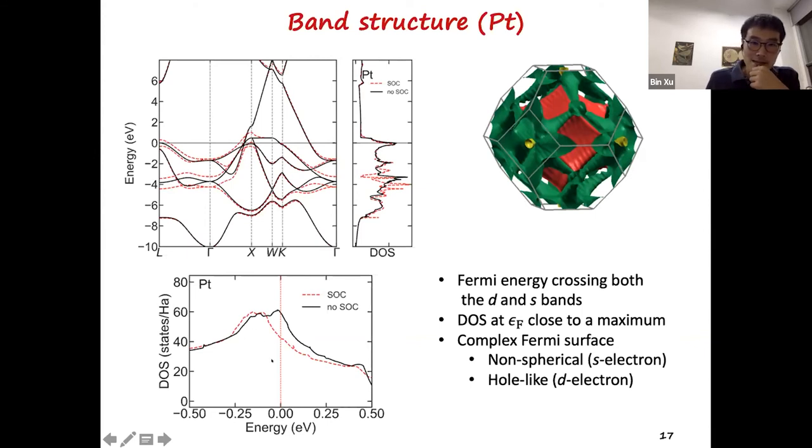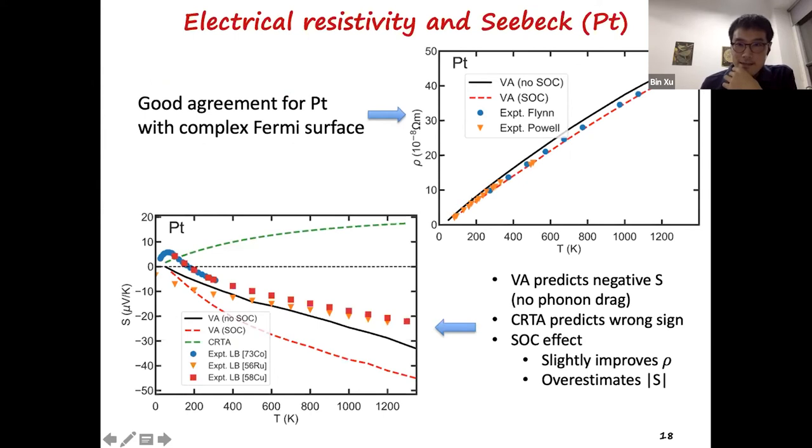And if you look at the density of states, it's close to a peak of the DOS. And we also consider both SOC and without SOC for platinum. For resistivity, the agreement is very good with experiment from the variational approach for both either with or without SOC. For Seebeck coefficient, without SOC, the agreement is actually better with the experiment. Including SOC actually overestimates the magnitude. But if we take the constant relaxation time approximation, although platinum has a normal sign of Seebeck that is negative, but somehow CRTA predicts the positive sign, which is wrong.